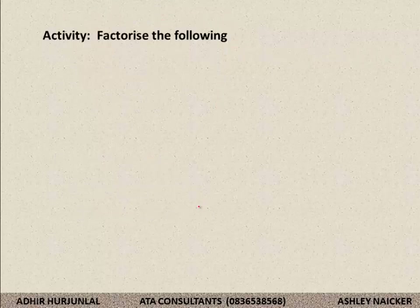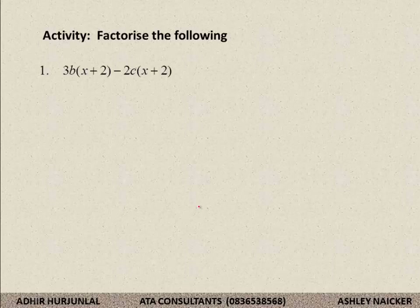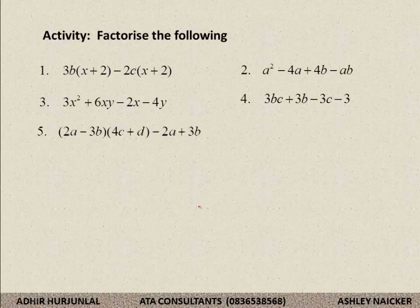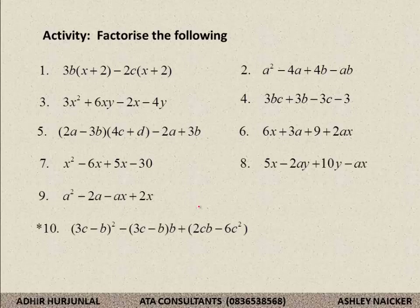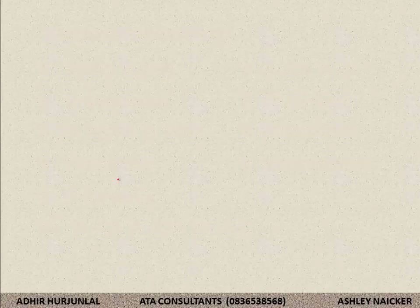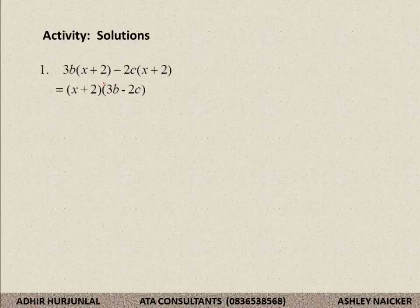Let's go to the activity. Factorize the following — ensure that your brackets are prime factorized. If you can't factorize the bracket further, factorize it further. Number 10 is a very tricky example — it is not a level 2 examination type question, it's for those of you who think you are too clever. Number 7 is also not a very good question. Press pause now. I'm sure by now you have completed the activity. Let's mark it and see how many of you have full marks. I'm not going to spend too much time with the solutions — your lecturer will explain any questions. If I have made an error in the answers, discuss it with your lecturer.